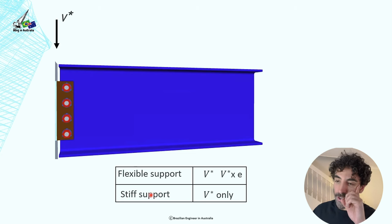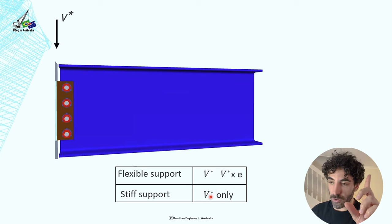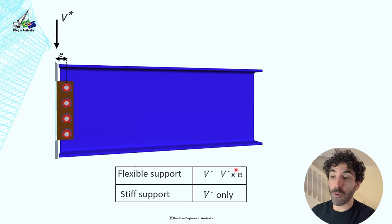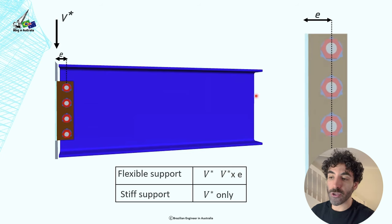So pay attention to this, because this is where a lot of engineers will get wrong. So for a stiff support, we design the bolts for the V* shear force only. So that's your typical V* divided by the number of bolts, and that's the shear force that you're going to design the bolt. However, for a flexible support, we should design the bolts for the V*, and also for the V* times the eccentricity between the centroid of the bolt group and the support, which is our design bending moment M*.